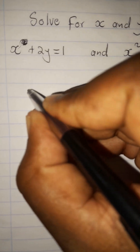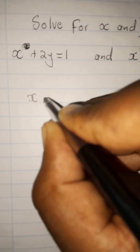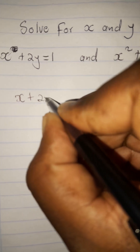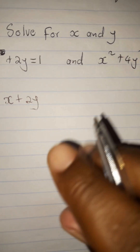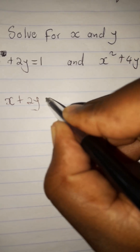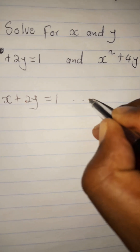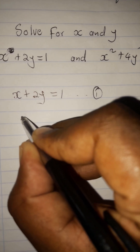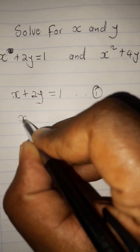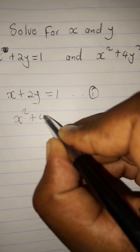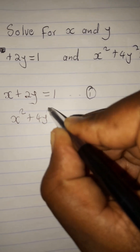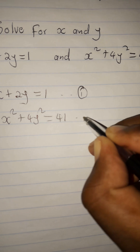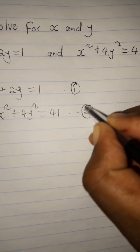We'll start with the one that has the linear equation. So we have x plus 2y equated to 1 — we will name this equation 1. Then we have x squared plus 4y squared equated to 41 — we'll name this equation 2.